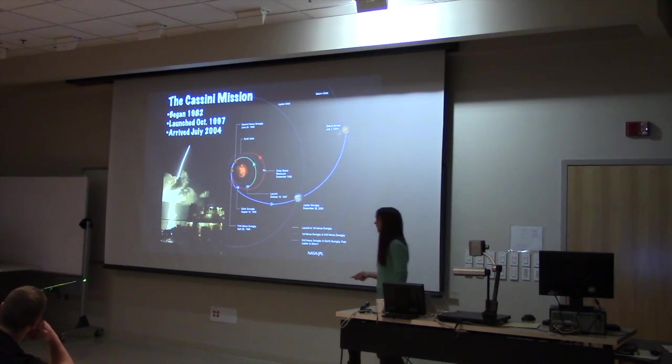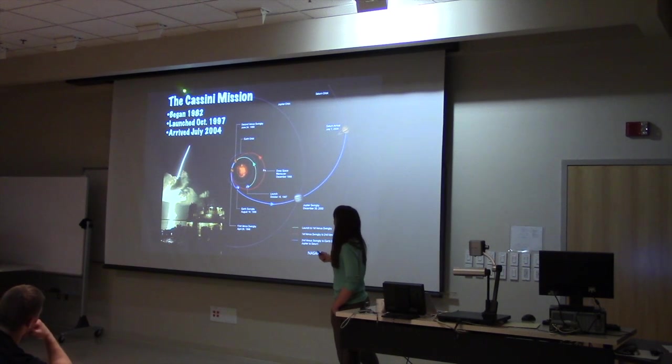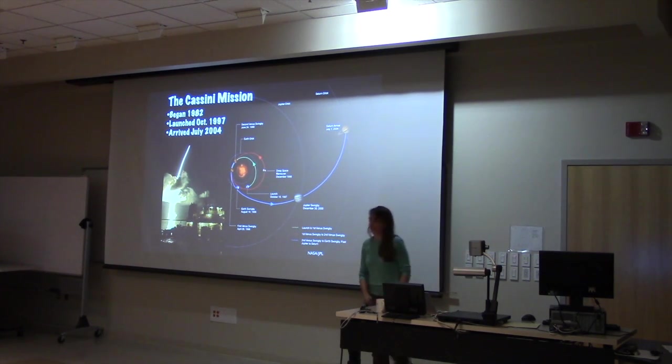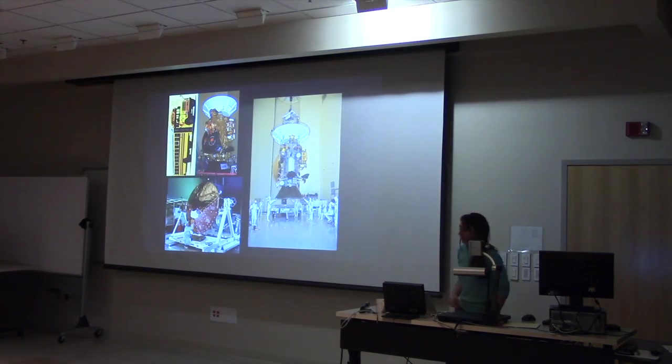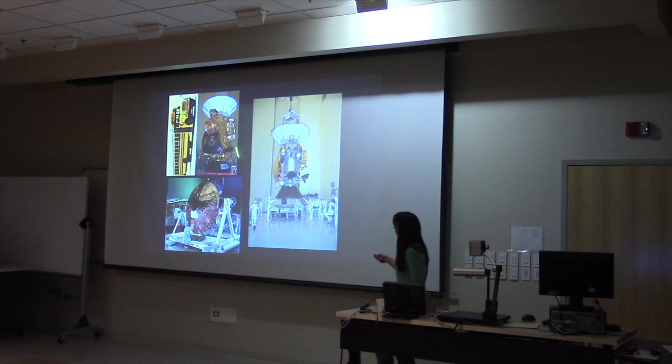So the entire time I was alive, basically, people were, the same people that I work with now on the mission, were planning this mission and getting it to Saturn. The Cassini spacecraft looked like this before it launched. Obviously it's in space now. But it's quite big. It's about the size of a school bus.